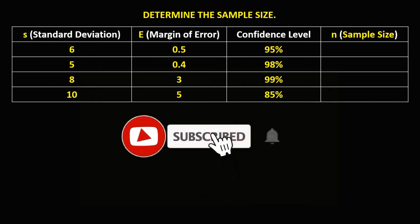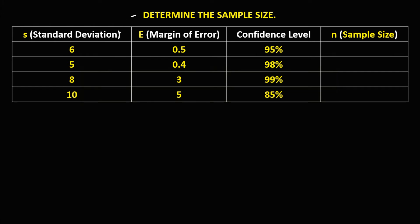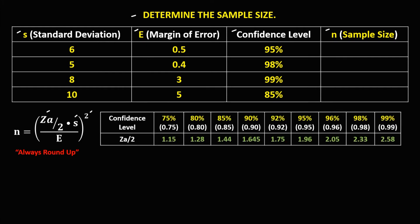Welcome to MathStoria. Let's have this problem: determine the sample size of the given data. We have the standard deviation, the margin of error, and the confidence level. To solve for the sample size, use this formula: the confidence coefficient times the standard deviation over the margin of error, then quantity to the power 2. Take note that the sample size always rounds up. Use this confidence level table to solve for the confidence coefficient.